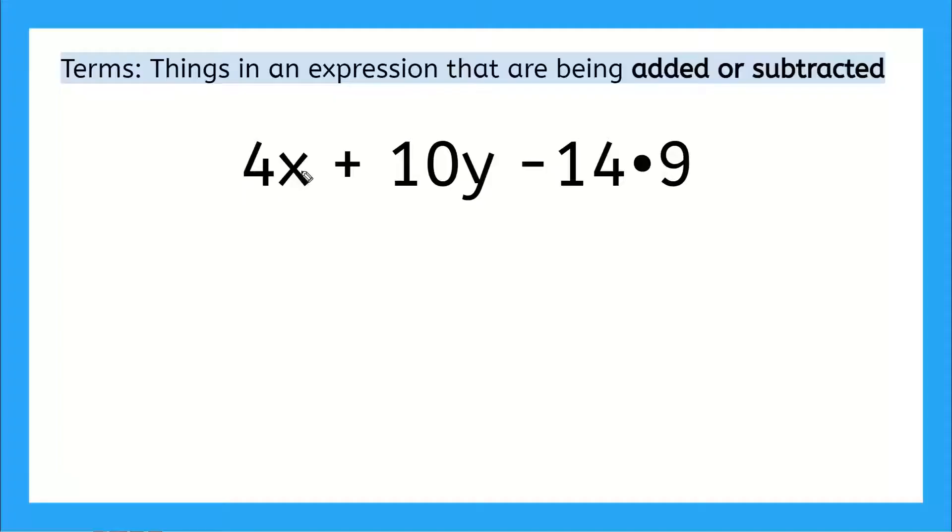Yeah, that's right. We have three terms. We have this one here, this one here, and this one here, because these are all separated by addition or subtraction signs. So we could write out our terms are 4x, 10y, and 14 times 9. These three things are what we call terms. So this expression has three terms. Simple enough, right?